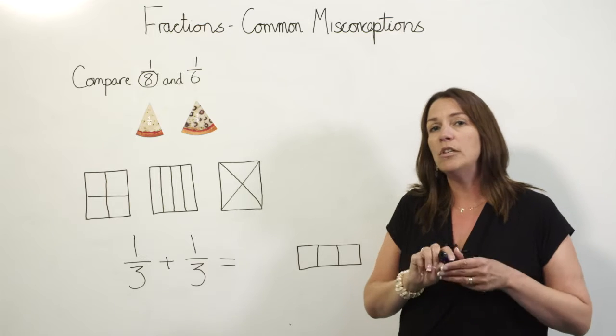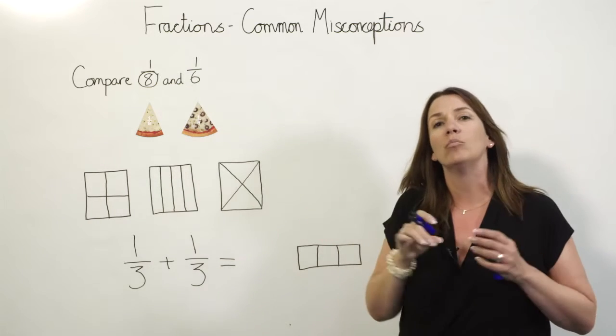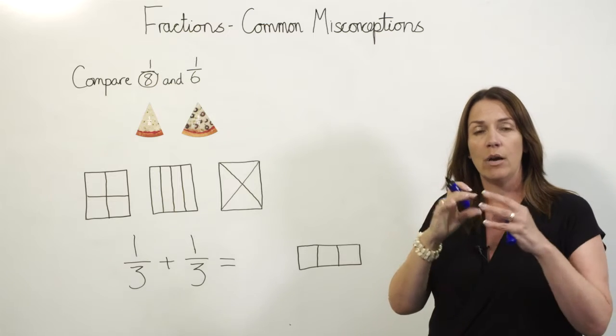To combat that, give pupils lots of opportunities to use concrete apparatus like fraction tiles or a fraction wall so that they can physically see which ones are bigger.